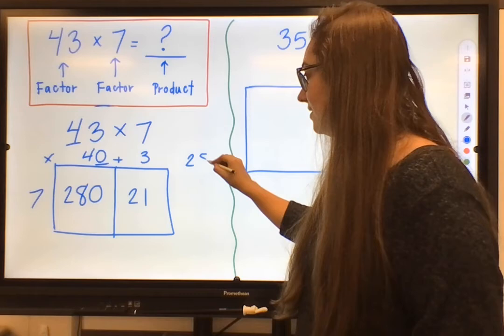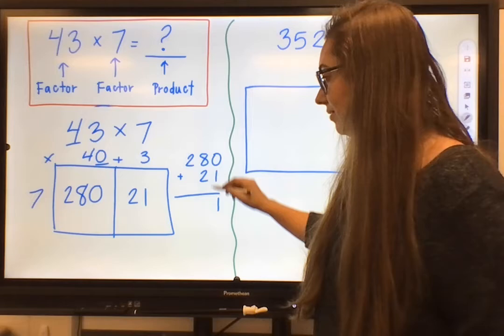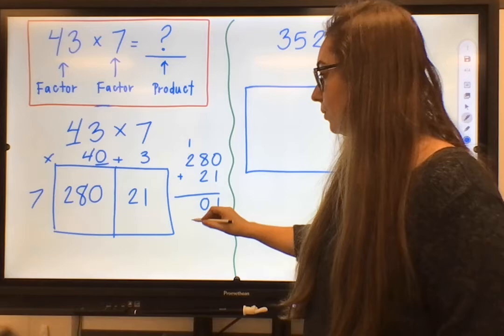Now, we go from greatest to least with stacking these in order to just make sure that everything's nice, neat, and organized. And we're going to add those together to get our final result. So all the way straight down, 0 plus 1, 1, 8 plus 2, 10.